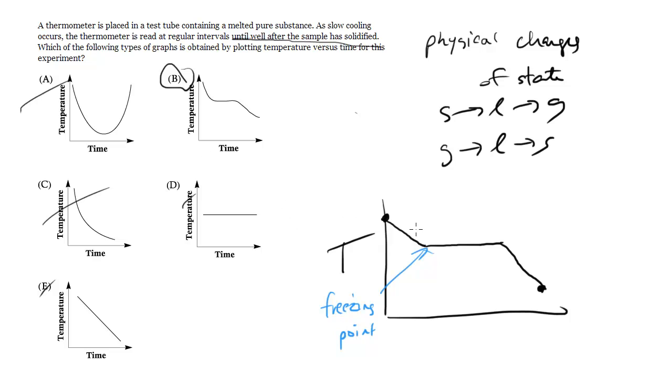So remember with your heating cooling curves, there's these flatlines and it's right here. This is freezing or if we're going up, it's melting, but in this case, it's freezing. This is where you have that state change of state and the temperature remains constant during this process as well.